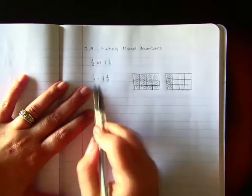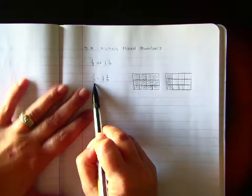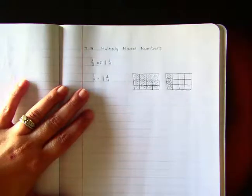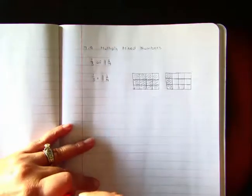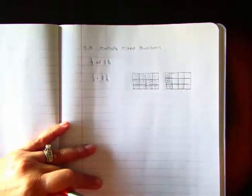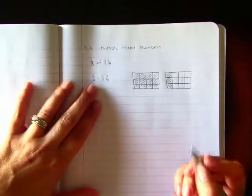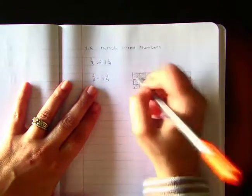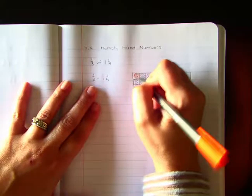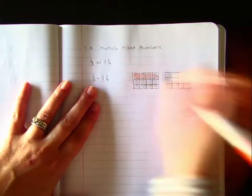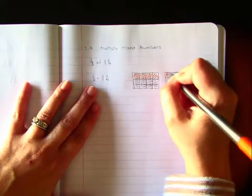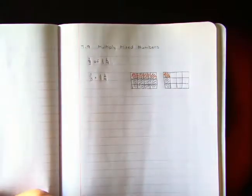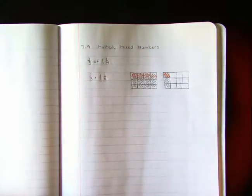And I need to find one-third of one-and-one-fourth. So remember, what I have colored in pencil already is showing me one-and-one-fourth. So now I need to find one-third of what I have colored. So here is one-third of my whole, and here is one-third of my one-and-one-fourth.